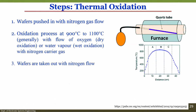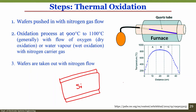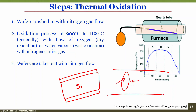When a silicon wafer is placed inside the horizontal tube furnace, oxygen reacts on all exposed surfaces. In the cross-section of an oxidized silicon wafer, you must show silicon dioxide on both the front side and the back side, with silicon as the substrate in between.